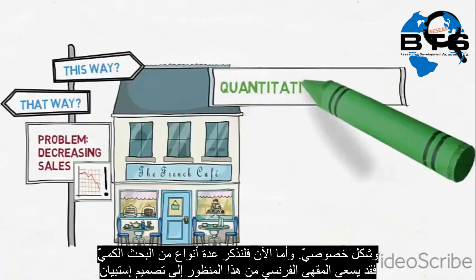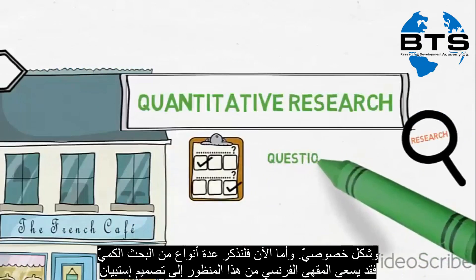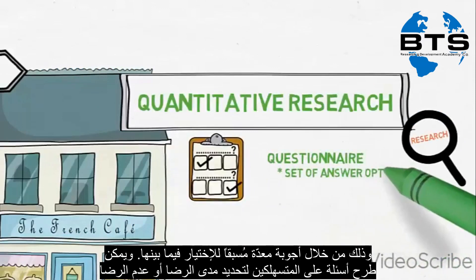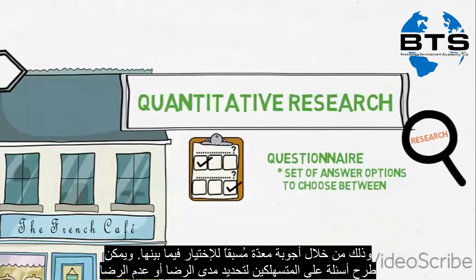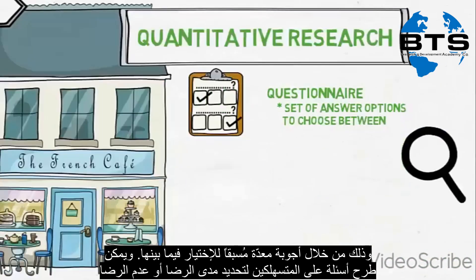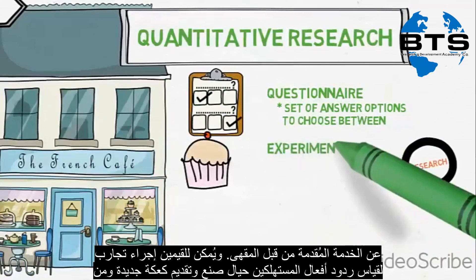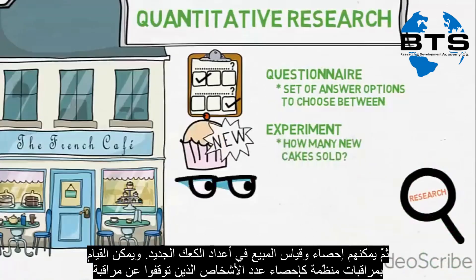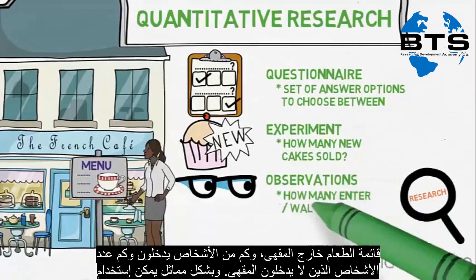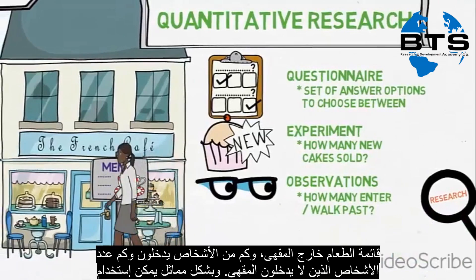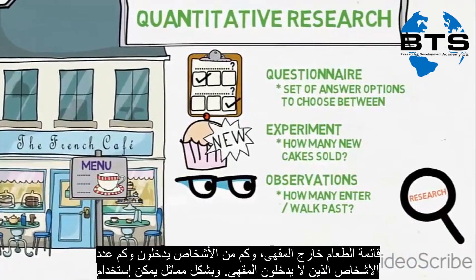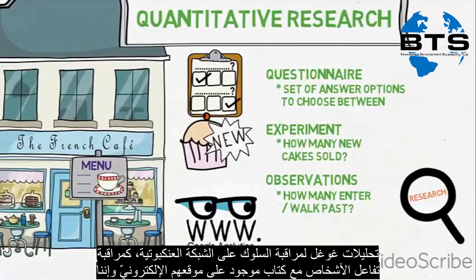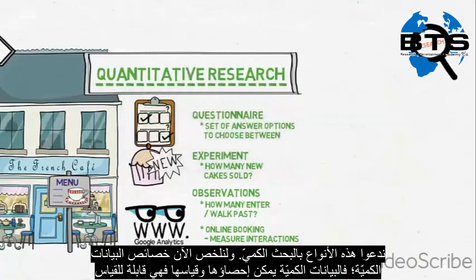Now let us introduce a few types of quantitative research. The French café could design a questionnaire with a set of predefined answers for respondents to choose between — for example, asking respondents to indicate to what extent they are satisfied or dissatisfied with the service they receive. They could also carry out an experiment where they test customers' reaction to the launch of a new cake and measure how many new cakes are sold. They could carry out a structured observation, for example counting how many customers stopped to look at the menu outside the café and how many chose to enter or walk away. Similarly, they could use Google Analytics to observe online behaviour, for example by measuring interactions with the book-a-table feature on their website. We call this type of research quantitative research.